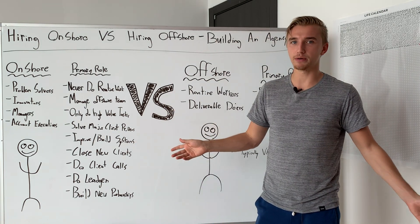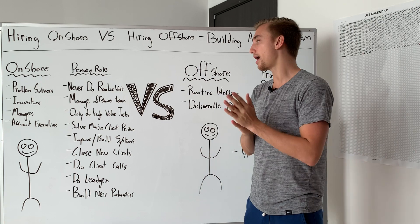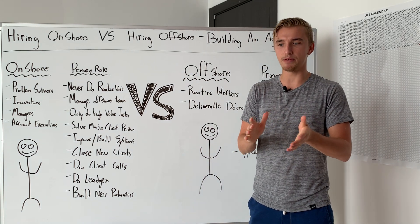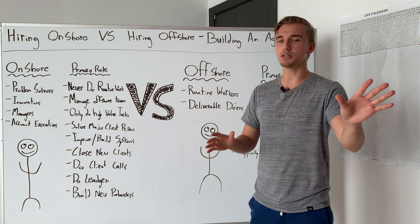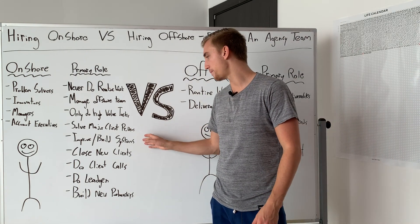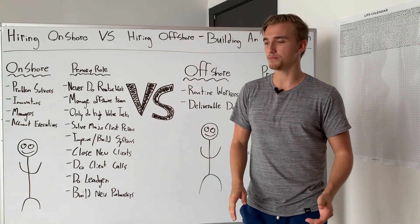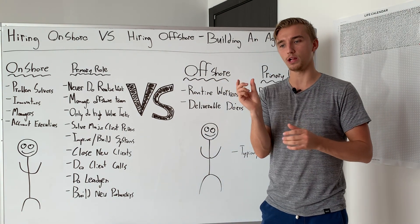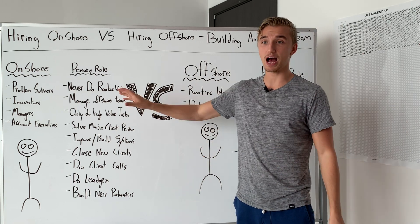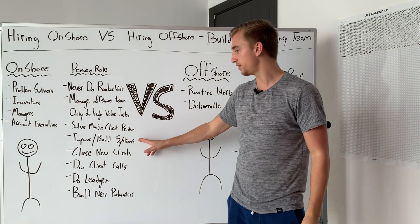Solving major client problems is another primary role of the account executive. They're talking to the client, maintaining the relationship, keeping the client happy, and keeping the account in good order. If there's a major client problem — campaigns go down, products go out of stock, or the offshore team's work wasn't good — they solve that problem, which is worth $50 to $100 per hour. The onshore team also improves and builds systems. If they notice a recurring problem or a hole in the agency framework, they patch it, build a system, and may even hire people to fix that hole.